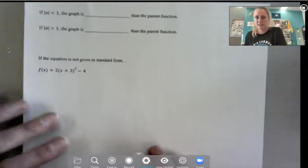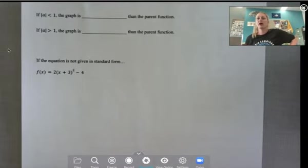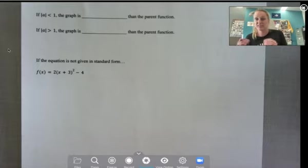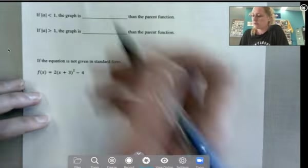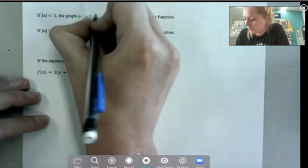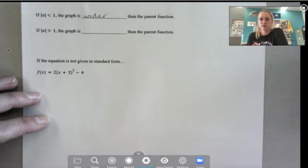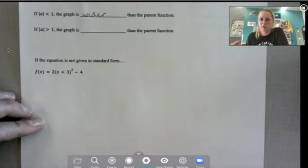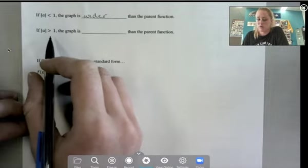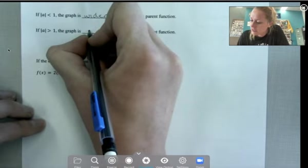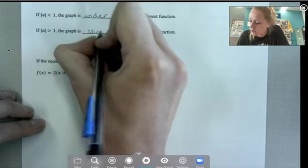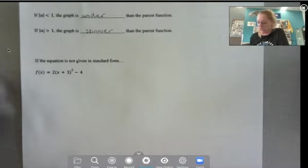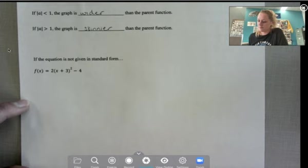All right. A couple more here. So if a is, and this is absolute value, so the positive, doesn't matter if it's positive or negative, but if it's less than 1, the graph is going to be wider than the parent function because it's a vertical compression. So this is something like 1 half, 1 third, 1 fourth. If a is greater than 1, then the graph is skinnier or thinner than the parent function.